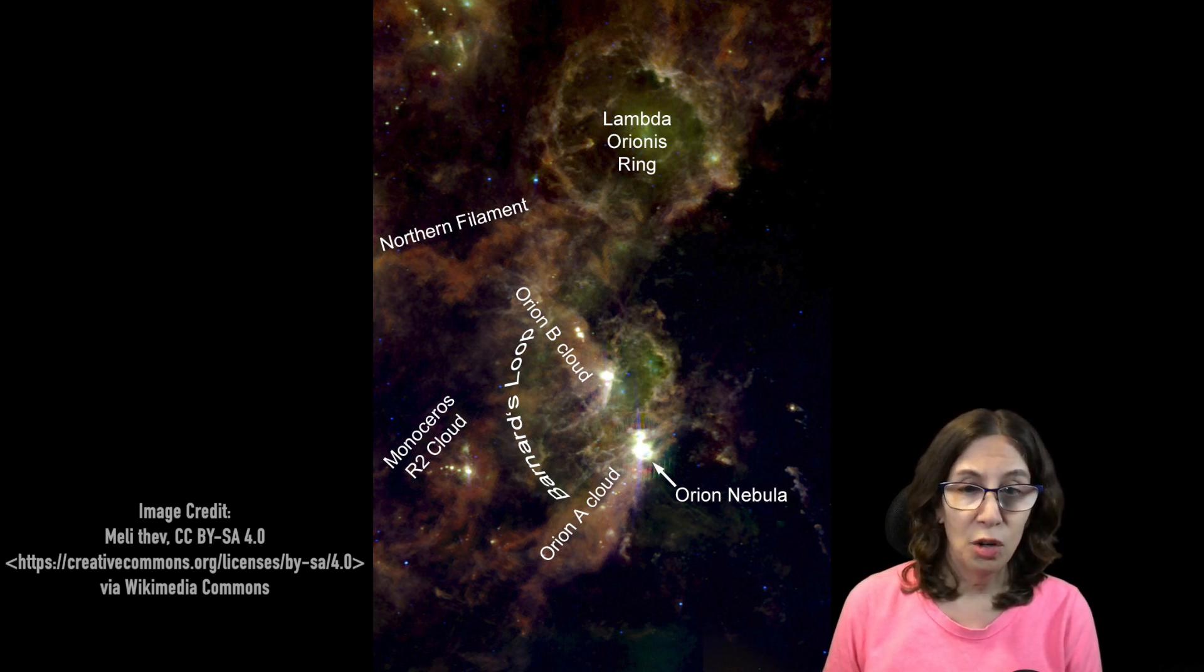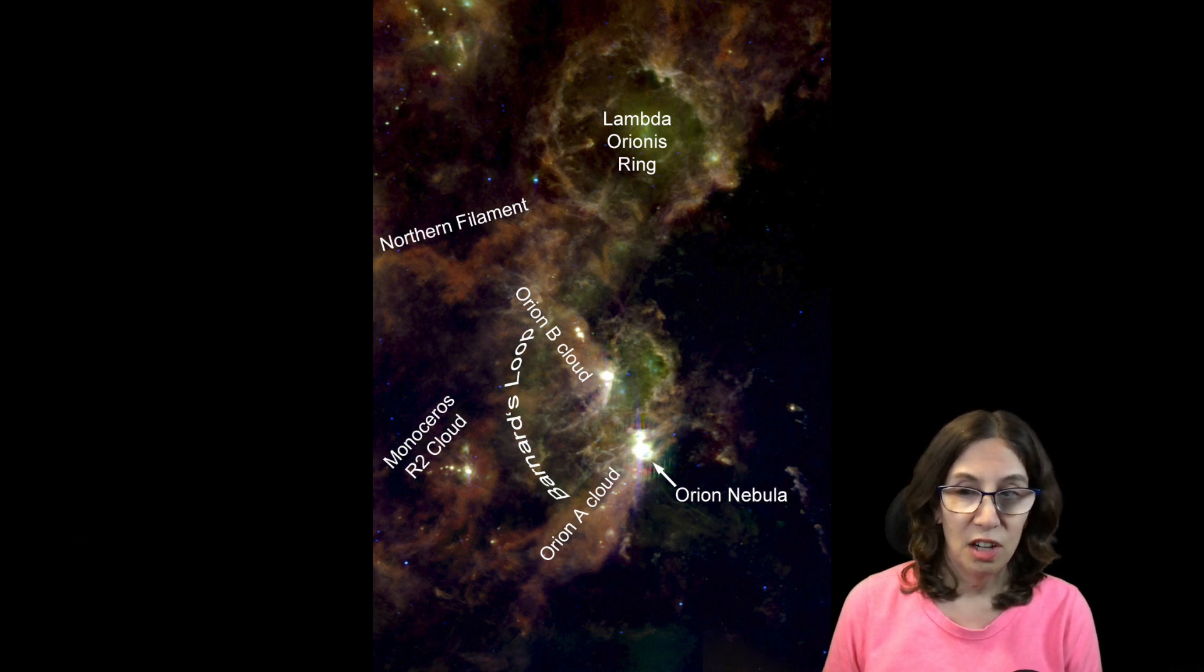The complex as a whole is 1,000 to 1,400 light-years away, and it spans hundreds of light-years in width. Other well-known deep-sky objects that are part of Orion B include the flame and horse head, while M42 is part of Orion A.